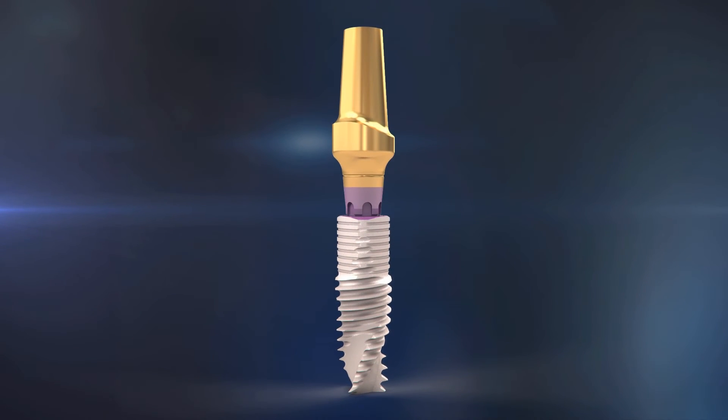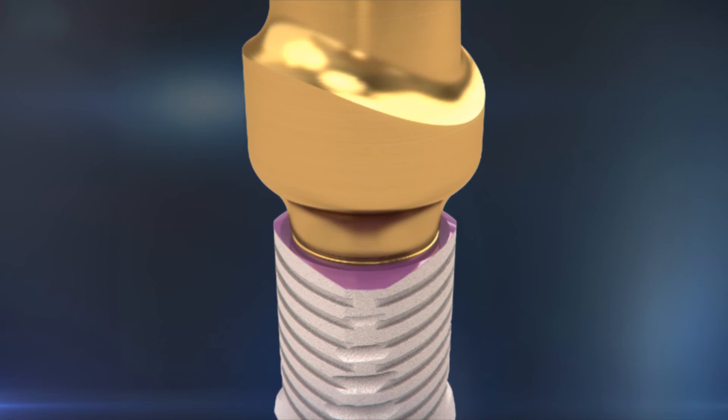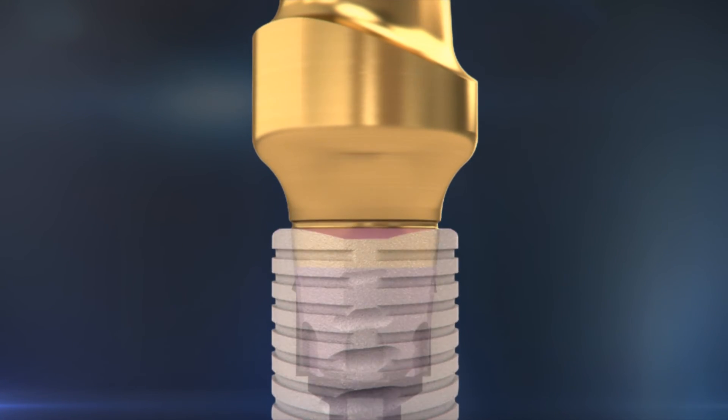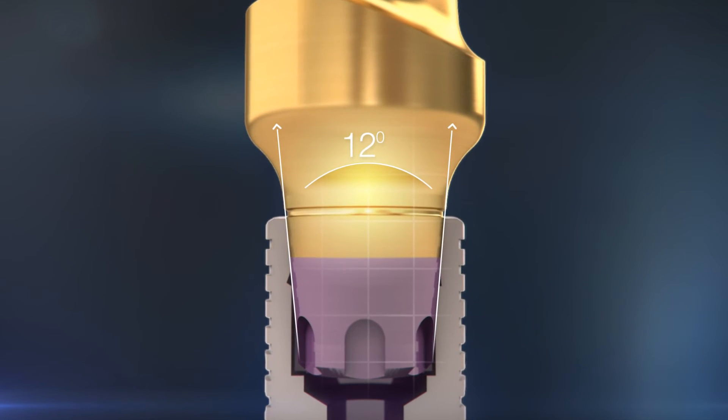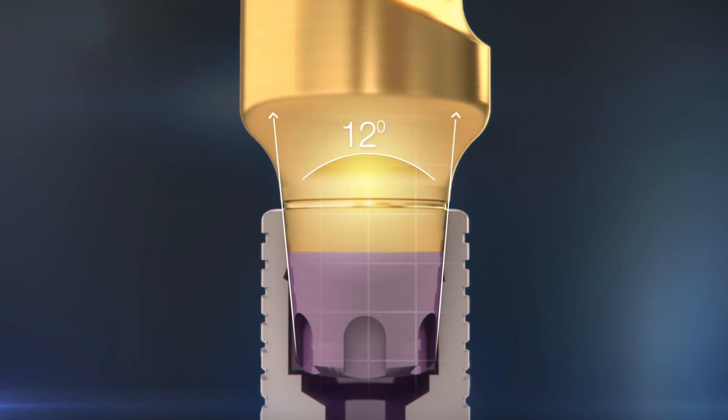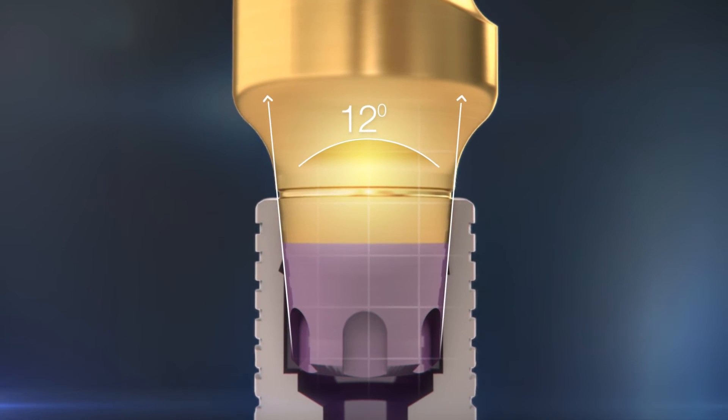V3 prosthetic components provide a full range of restorative solutions. A 12-degree conical connection creates an excellent seal at the implant-abutment interface and minimizes micro-movements to ensure undisturbed bone remodeling.